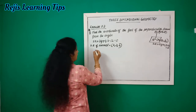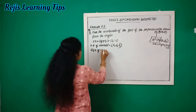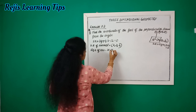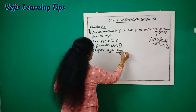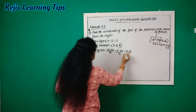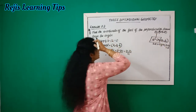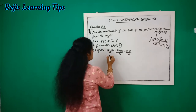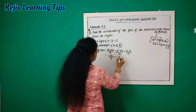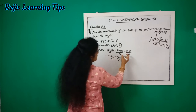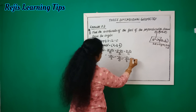Now we write the equation of line ON. The equation of a line is: x minus x1 by a equals y minus y1 by b equals z minus z1 by c. Here the point is the origin (0,0,0), so x1=0, y1=0, z1=0, and a=2, b=3, c=4. This gives x by 2 equals y by 3 equals z by 4.